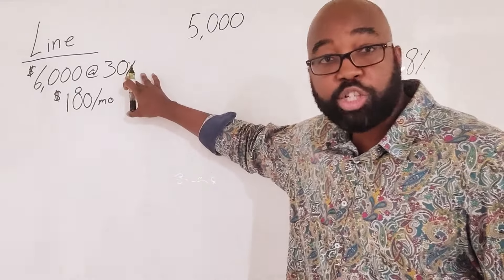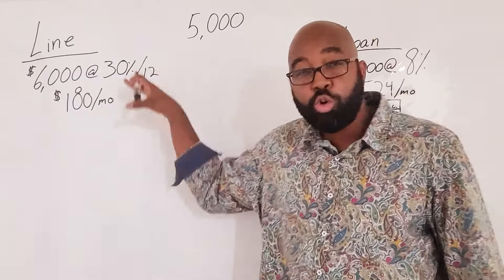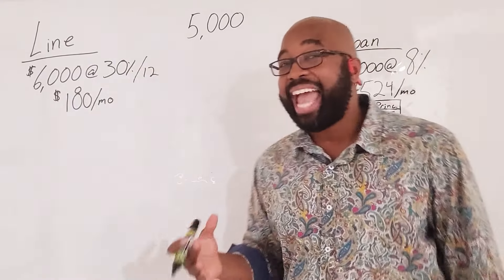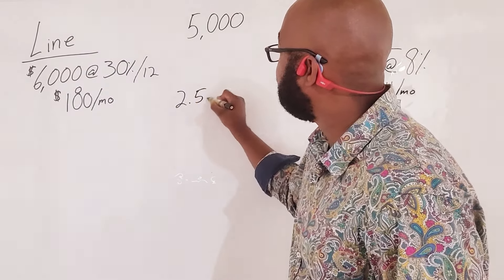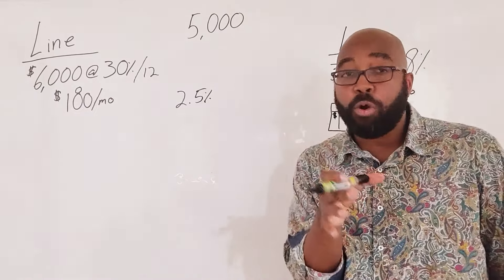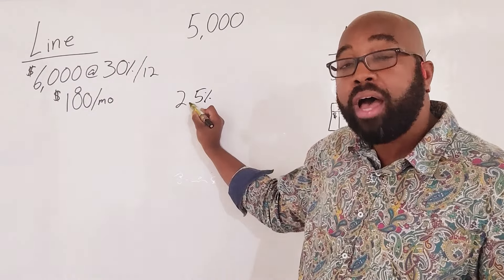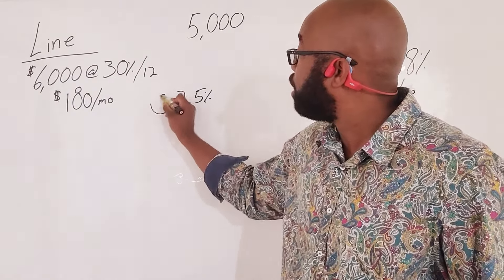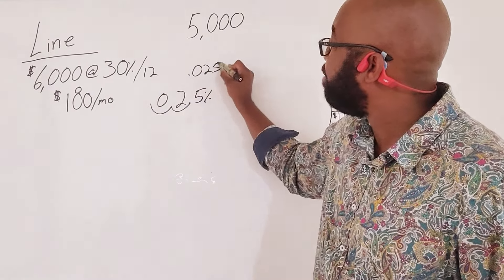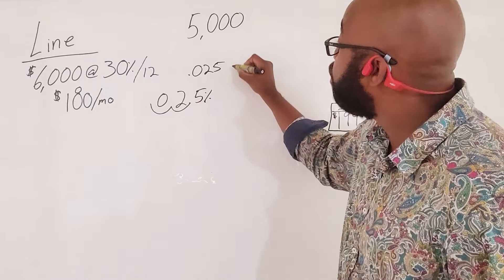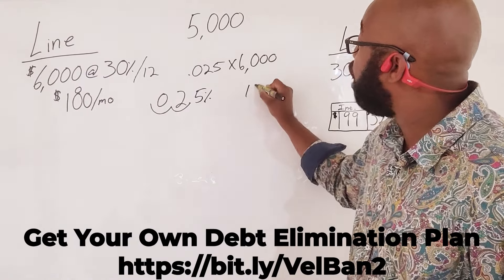This is how you do it. You take this percentage rate right here and you divide it by 12. In this scenario, that's going to be 2.5%. How do you write that in decimal form? You always take this decimal and move it two places to the left. So one, two, it's going to be a zero right there. 0.025. You're going to take that 0.025, multiply it by the balance of $6,000.